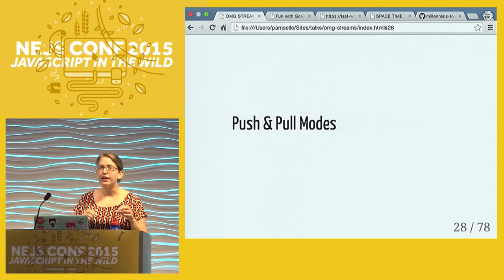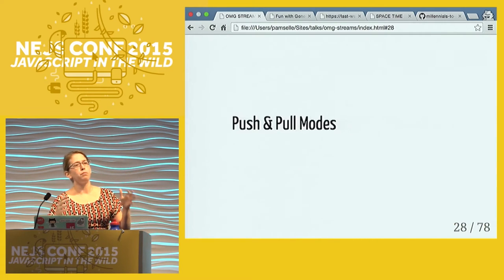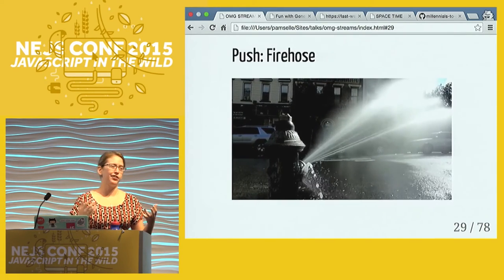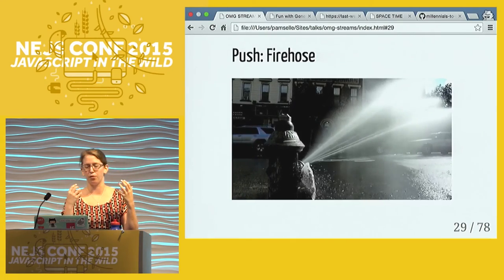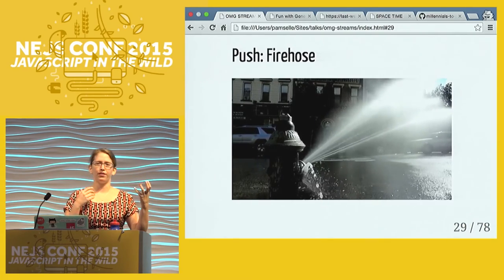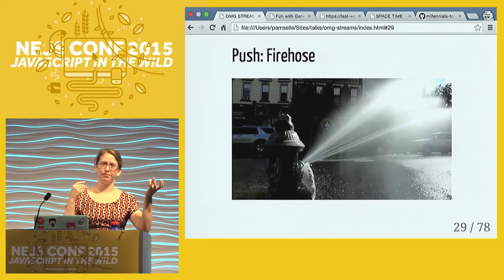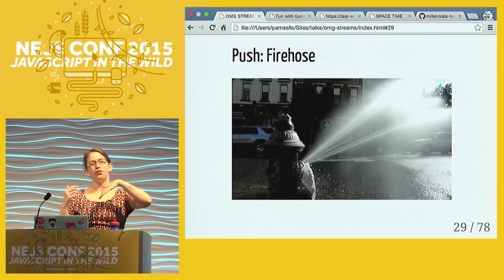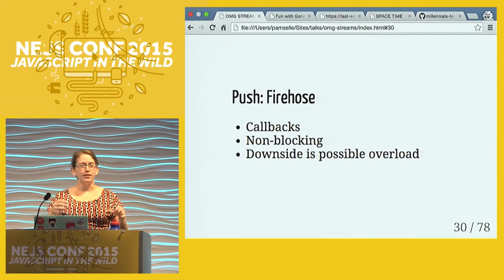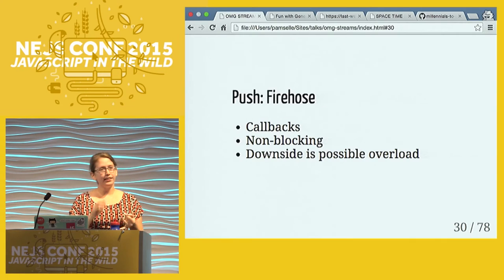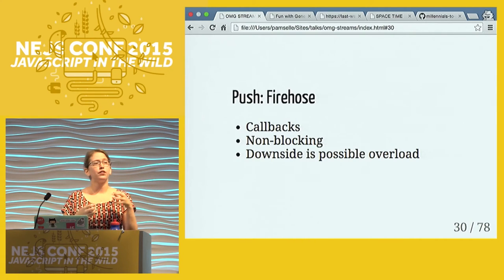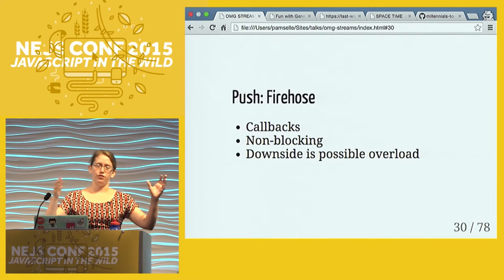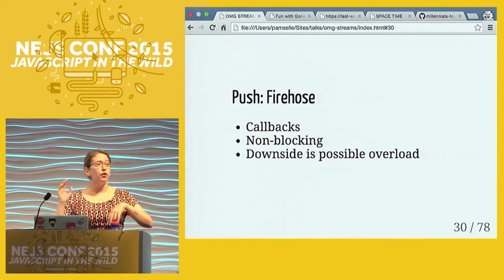Streams are an abstract data structure and come in two general flavors: push and pull modes. A push stream is like a fire hose - you'll see a lot of different vocab used: producer/consumer, source/consumer, the observed and the observer. In a push stream the source sends its data down to the receiver. The symptom of using a push stream - callbacks, non-blocking systems. The source just throws data at the consumer. The downside is your consumer can get overloaded, such as in a multi-threaded system, if it doesn't have some way of handling a push stream.